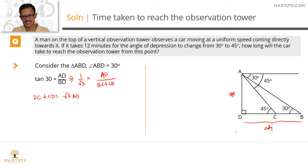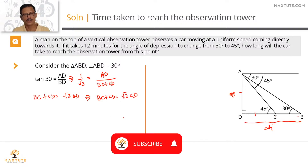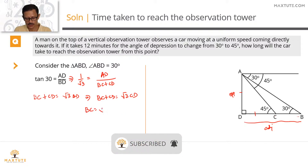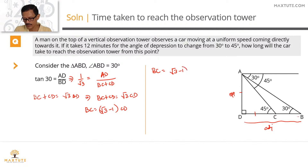Recall that in triangle ACD we established AD equals CD. So replacing AD with CD, the equation becomes BC plus CD equals root 3 times CD. Taking CD to the right-hand side: BC equals root 3 minus 1 times CD.